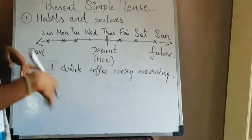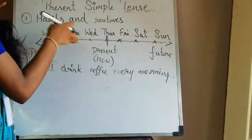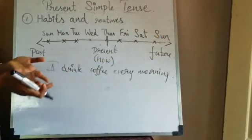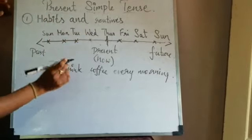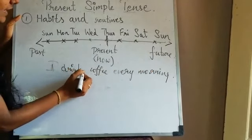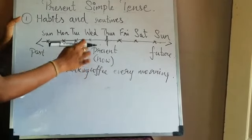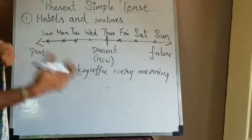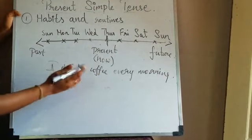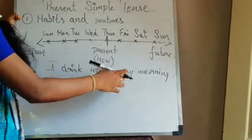The sentence 'I drink coffee every morning' is simple present tense. If you write 'I drinking coffee every morning,' this is wrong — that would be a continuous tense form, not simple present.